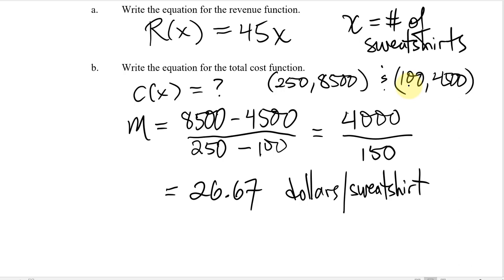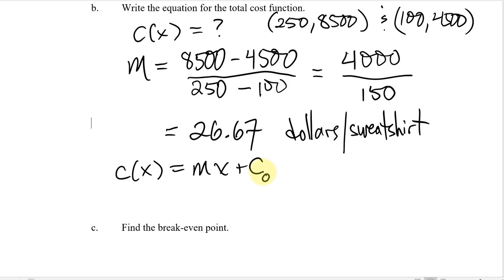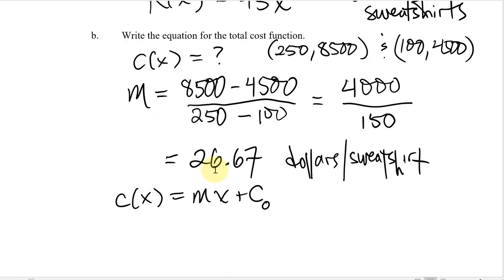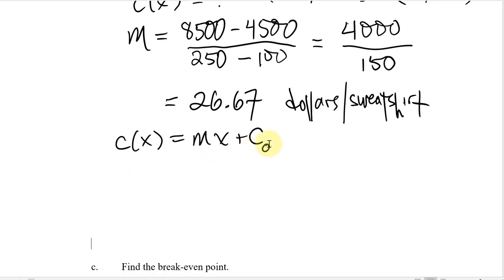I could use either of these points. The cost would have the form of some slope times X plus some initial cost — the cost of ordering zero shirts. We'll call that C₀, the cost of ordering no sweatshirts at all. What's generally called the Y-intercept here is the cost intercept — the cost at zero shirts.